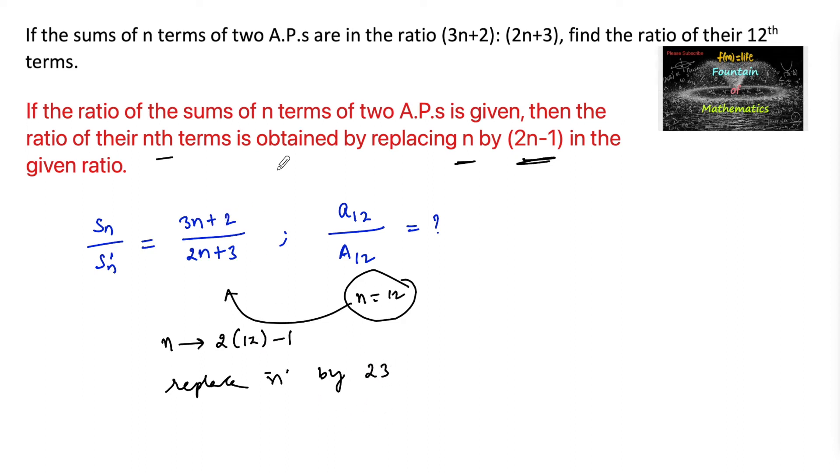So replace n by 23 in the sum to get the ratio of the 12th terms.